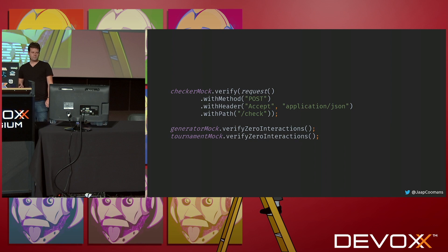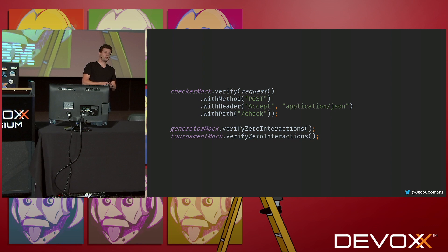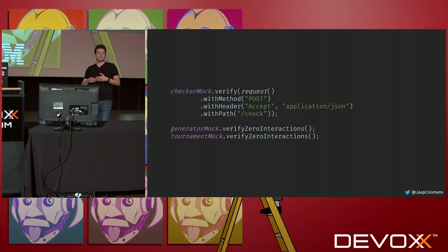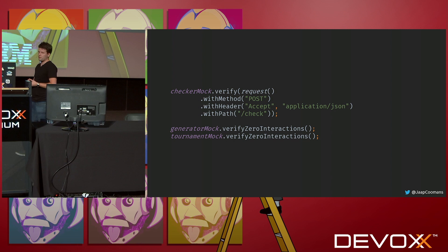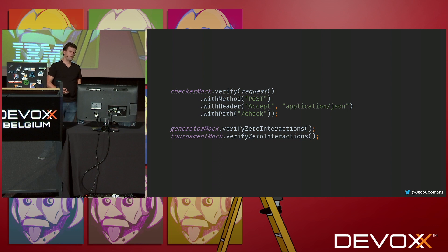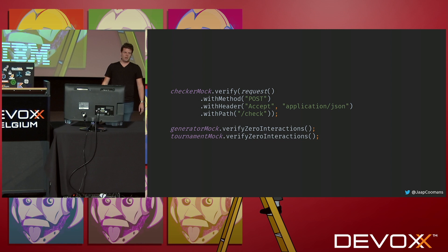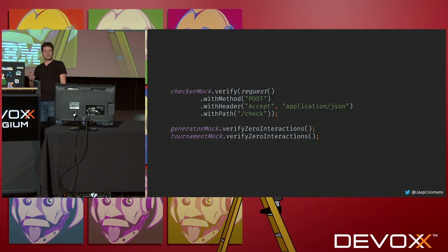After executing my test code, I want to verify what happened. I verify that my checker mock was actually called — a POST request with an accept header of application/json on path /check. Here too, the more specific I am, the more specific the verification. If you don't care about headers but just about the interaction pattern, just use the path and method. If checking cookies matters in certain cases, you can do that here as well.